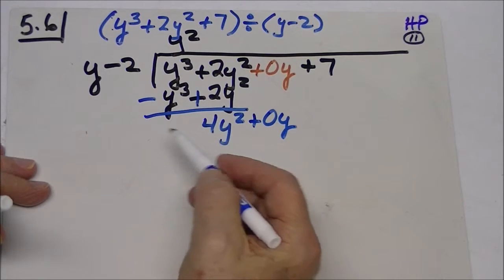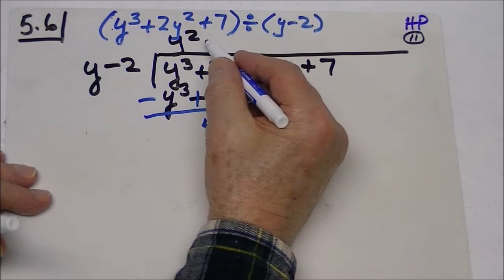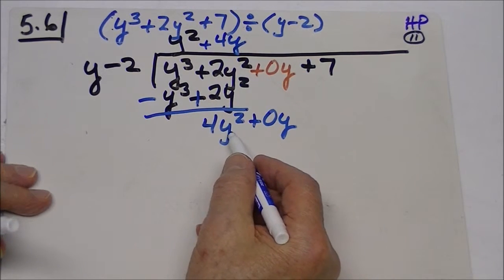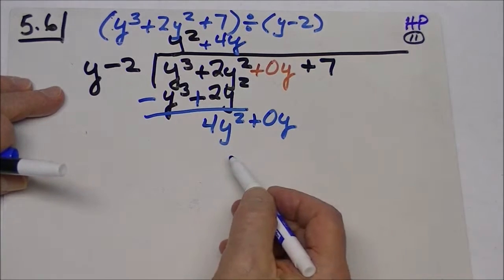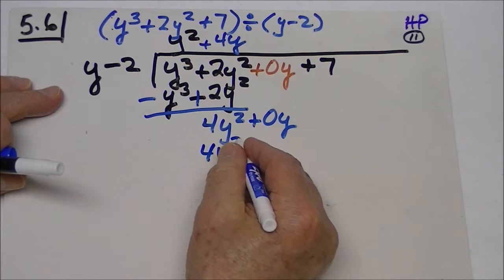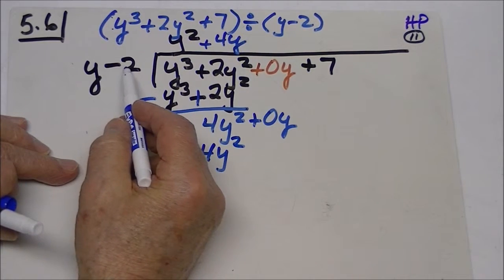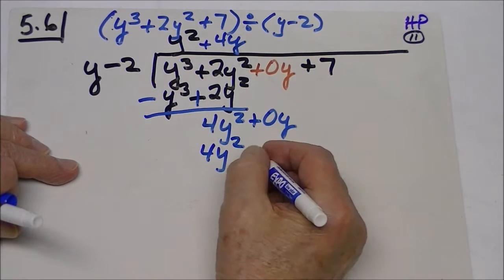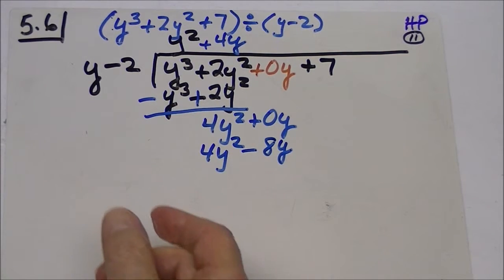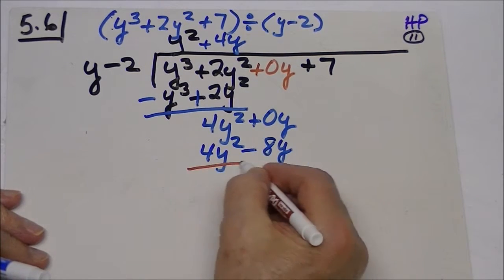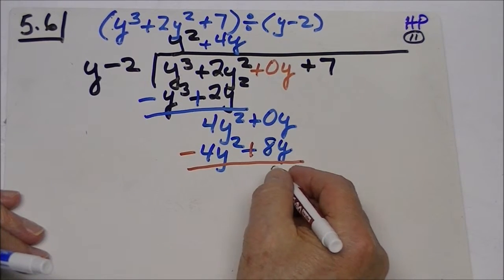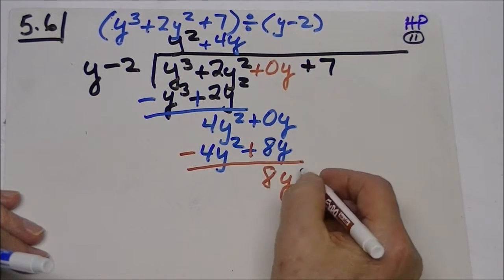And y goes into there how many times? Well, plus 4y. We're just dividing this by y and we end up with 4y. So now when we multiply y times 4y, we get 4y squared. We now go negative 2 times this and we get a negative 8y. Now what do we do? When we draw our line, we change our signs. So this now becomes 8y, bring down our 7.